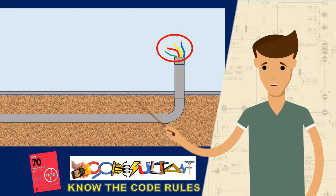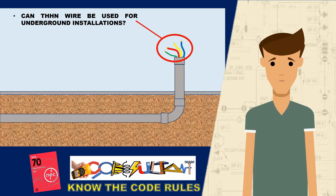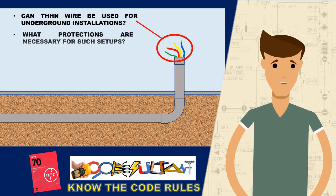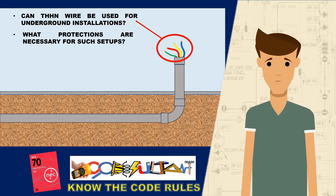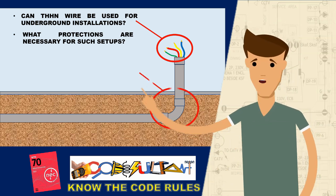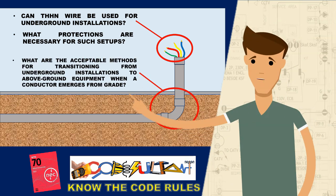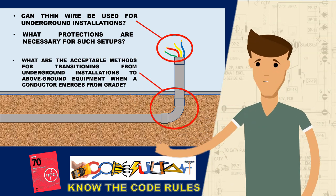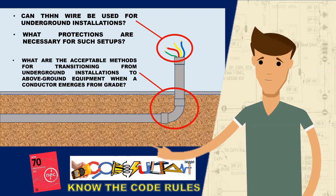Can THHN wire be used for underground installations? What protections are necessary for such setups? Additionally, what are the acceptable methods for transitioning from underground installations to above-ground equipment when a conductor emerges from grade?